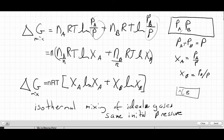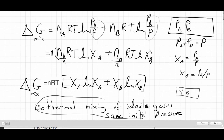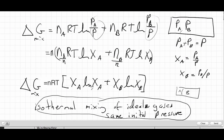The gases started at the same initial pressure separated by a movable barrier, and we allowed them to mix. The delta G of mixing we derived is this expression. It turns out we'll be able to adapt this result to solutions, which is what we'll do in the next screencast.